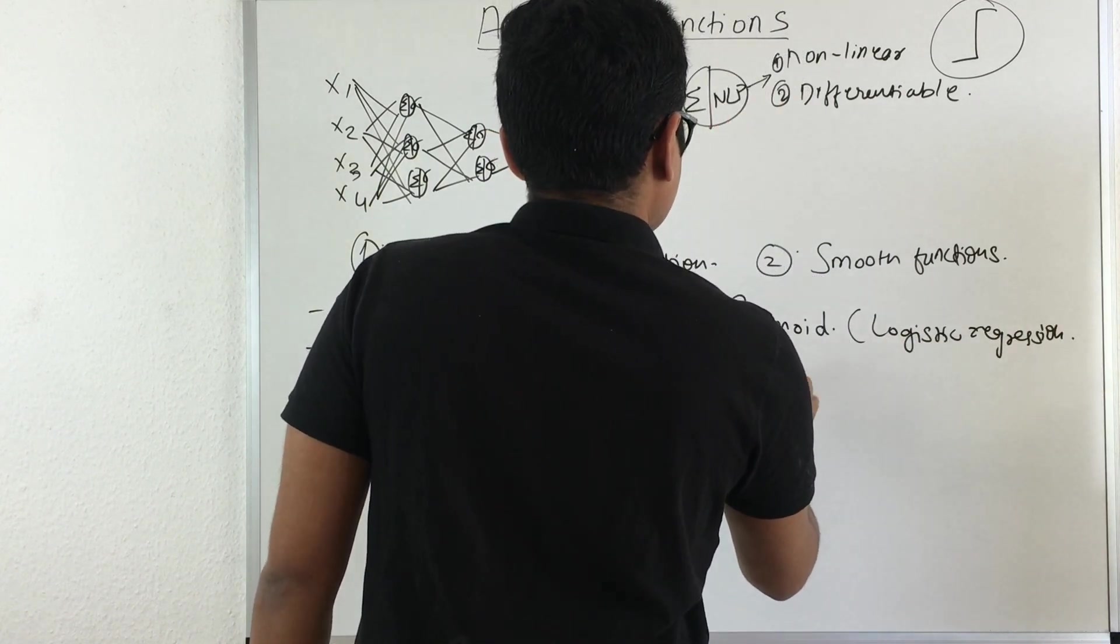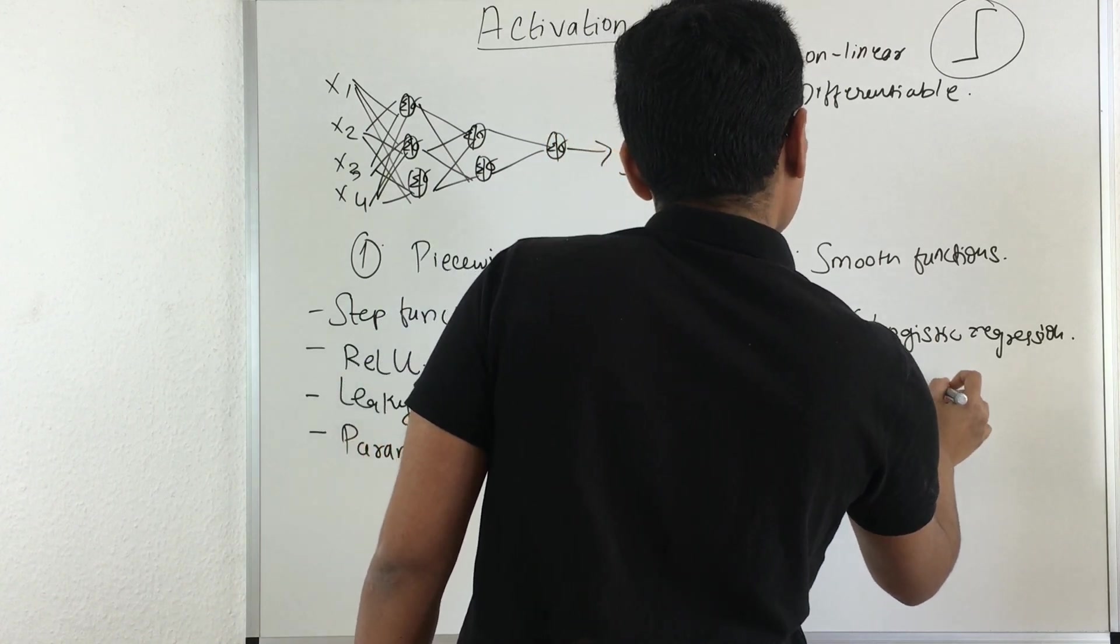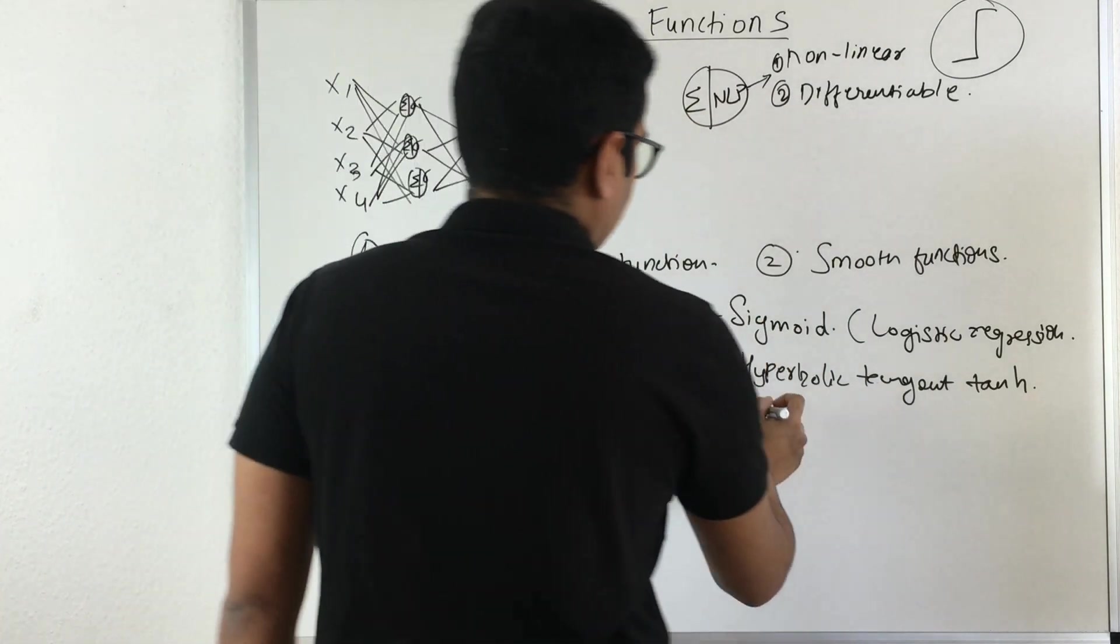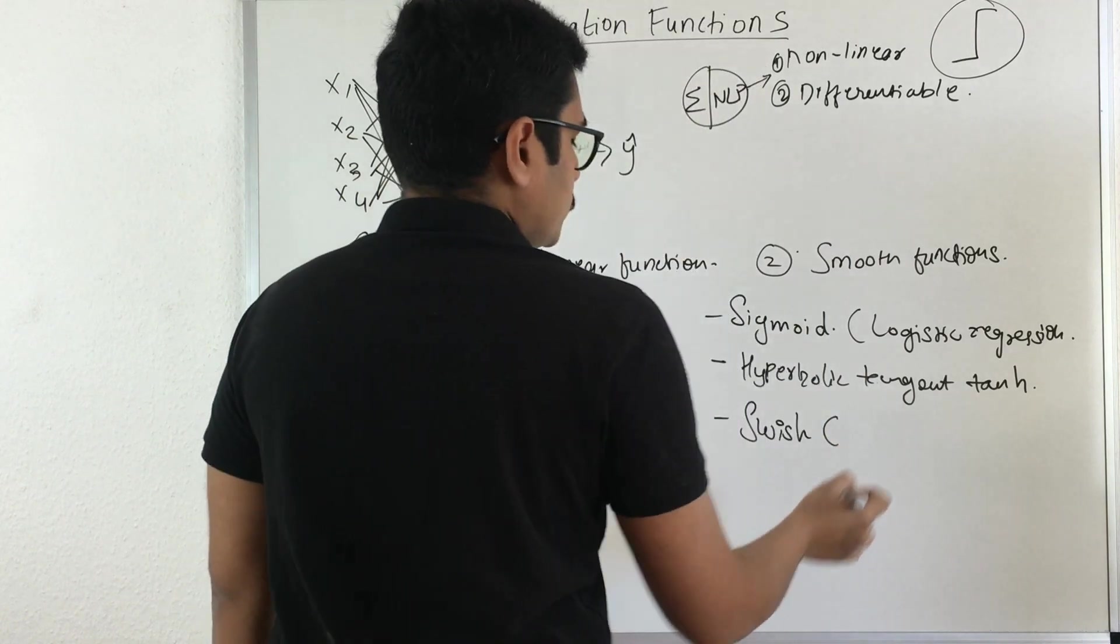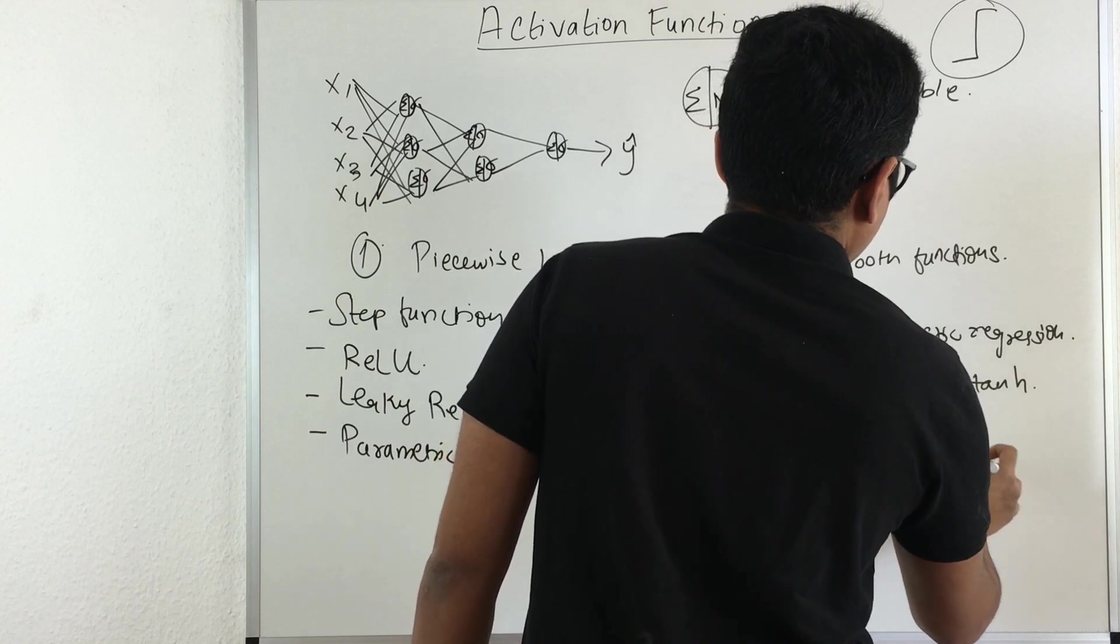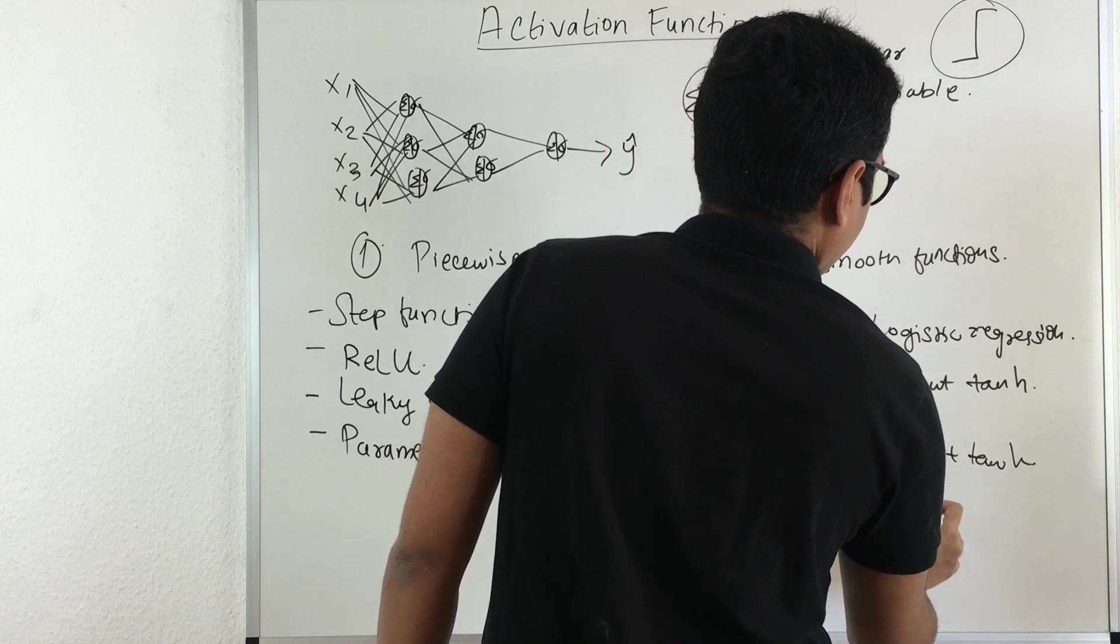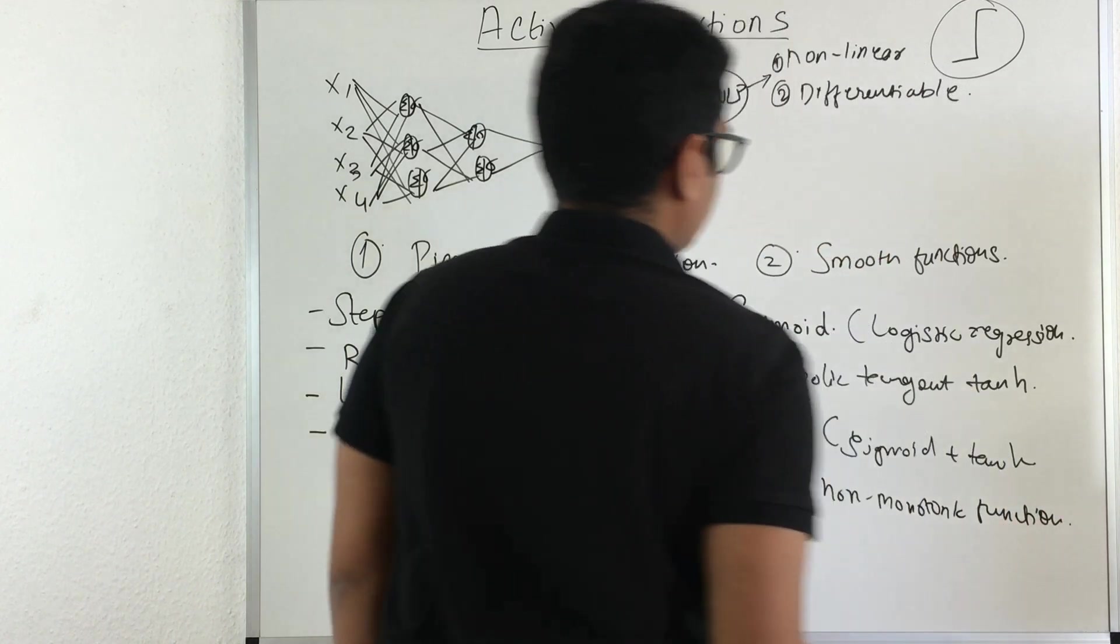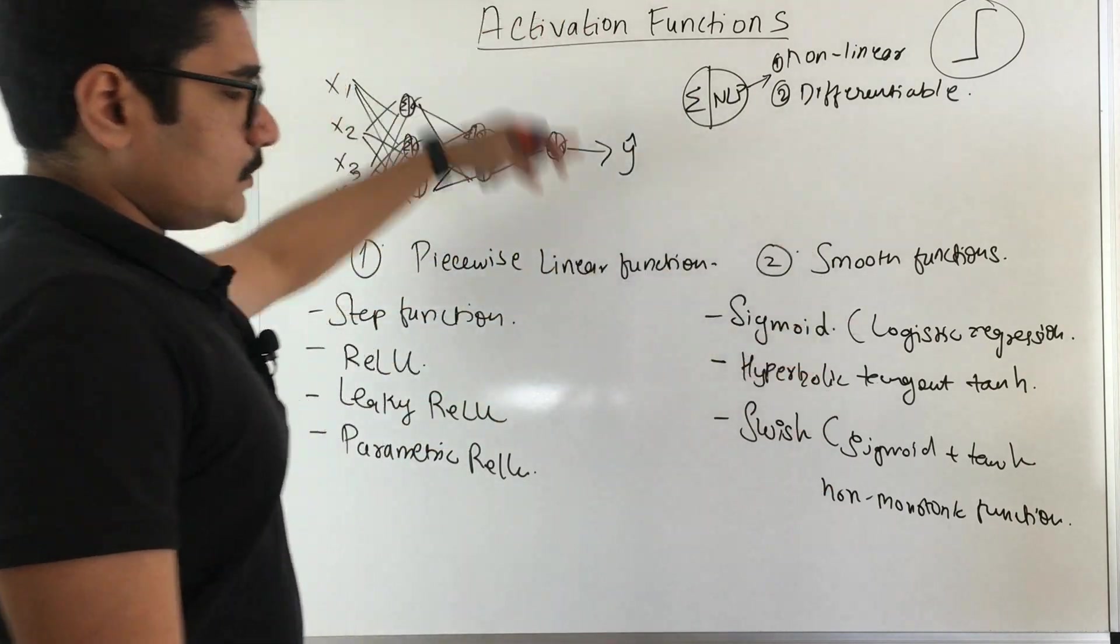In smooth functions you have sigmoid, which we know from logistic regression. Then we have hyperbolic tangent, that is tanh function. And then we have something called swish. Swish is a combination of sigmoid and tanh, which is a non-monotonic function and will outperform all other activation functions present in the literature for neural networks.